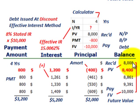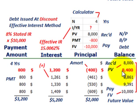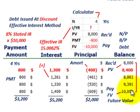We're amortizing this from $8,000 up to $10,000 using the effective interest rate method at 15.0062%. You can see that interest expense is increasing each period because the balance is also increasing based on the amortization schedule. The total effective interest expense is $5,200, the total cash payments are $3,200, and the amortized amount is $2,000 — which is simply the difference between the $8,000 present value and the $10,000 future value.